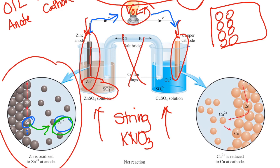Neutral zinc atoms on the surface of the metal have equal numbers of protons and electrons. When zinc loses electrons, it's no longer neutral — it becomes the zinc 2+ cation. As those neutral atoms give up electrons, they also leave the surface of the metal and go into solution as a cation. The difference between neutral zinc and zinc 2+ is two electrons.